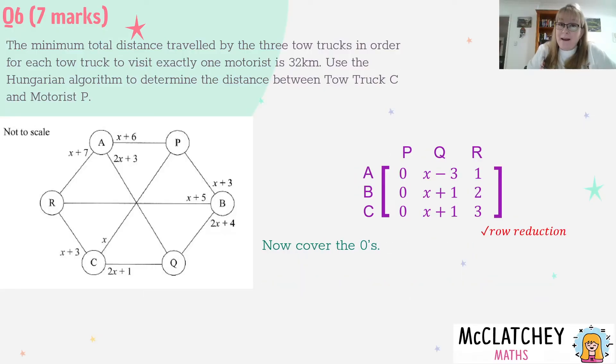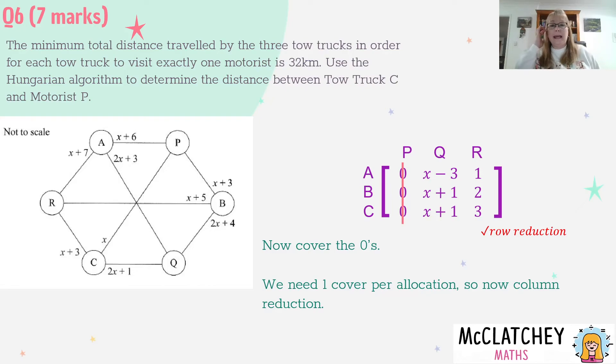Now we're going to cover those zeros. We need one cover per allocation. We want three allocations altogether - three tow trucks going to three motorists. The minimum number of covers here is one, which means I'm not done. I've got to move on to column reduction.